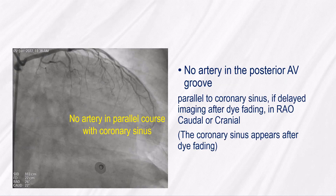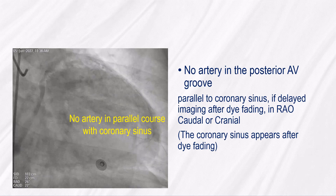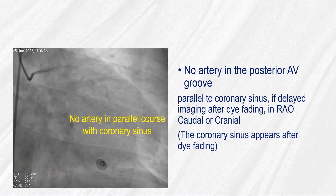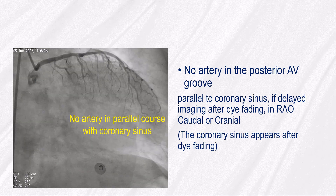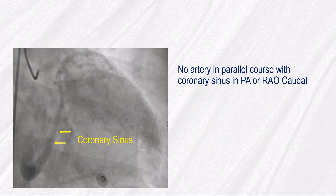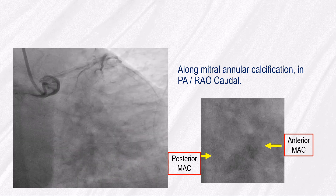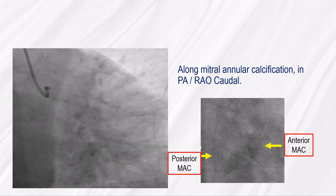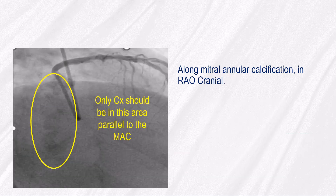No artery in the posterior AV groove is another sign. If there is delayed imaging after dye fading in the RAO caudal or cranial views, it should be parallel to the coronary sinus. If there is mitral annular calcification, the course of the CX should be parallel to it, as both are in the AV groove. In the RAO cranial view, only the CX should be in this area parallel to the mitral annulus calcification.